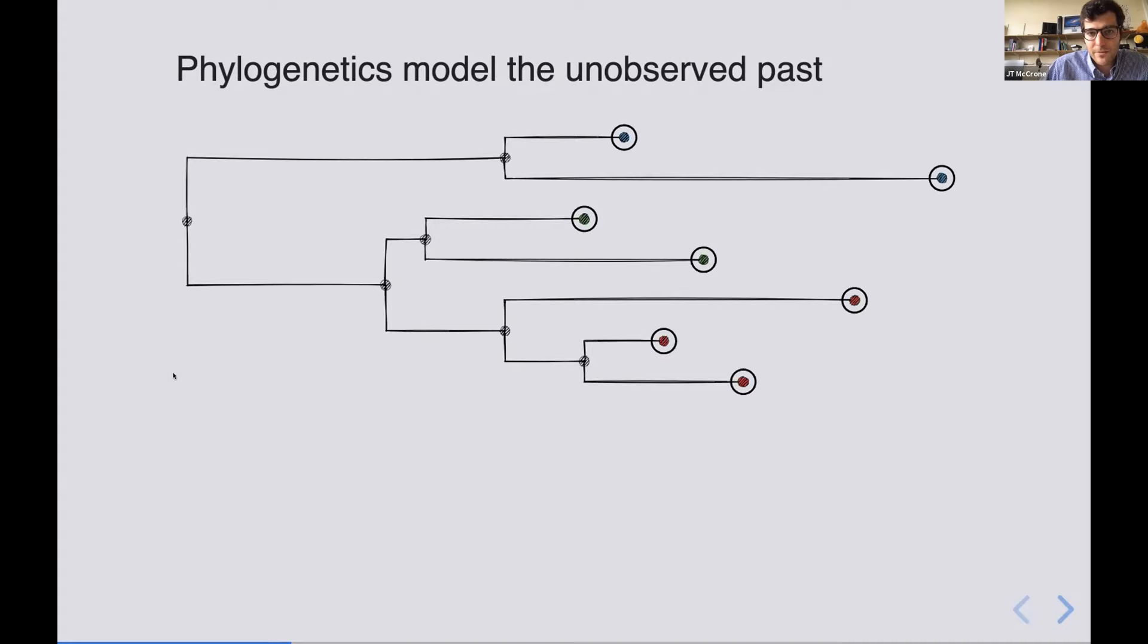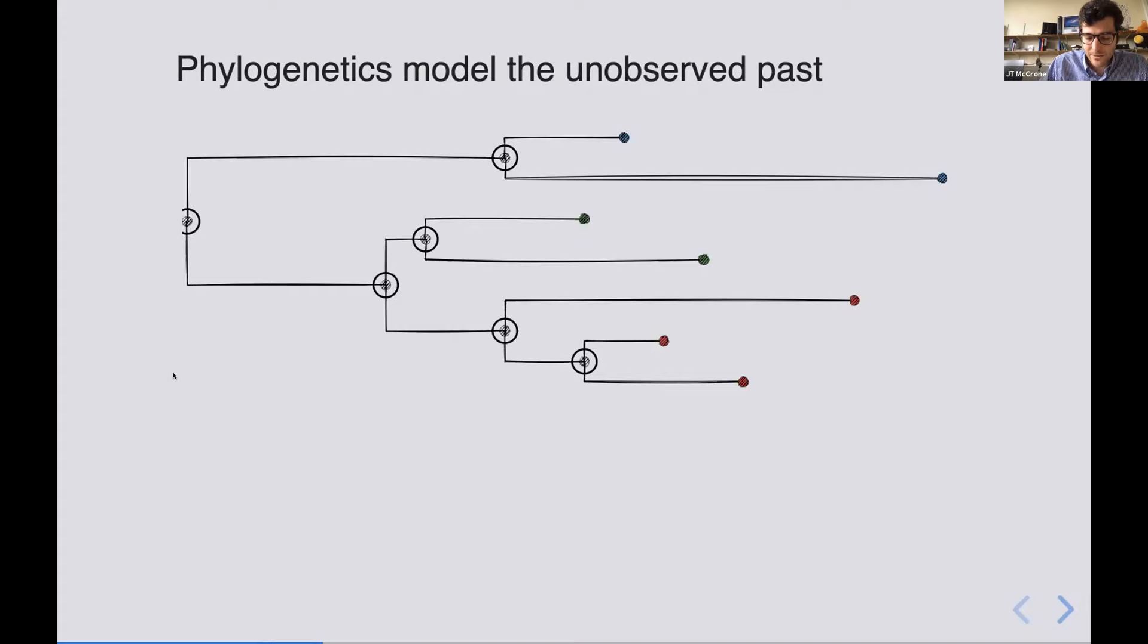These nodes here are internal nodes, they're common ancestors of the samples. And so this one here you can see represents a common ancestor of these two blue samples up here, whereas this one represents a common ancestor of these two green. And so we would say that the two blue samples are more closely related to each other than they are to any of the other samples because they have a common ancestor. They share a common ancestor here before they share one with all of the other samples in the tree, and they would share their common ancestor with the rest of the samples back here at the root of the tree.